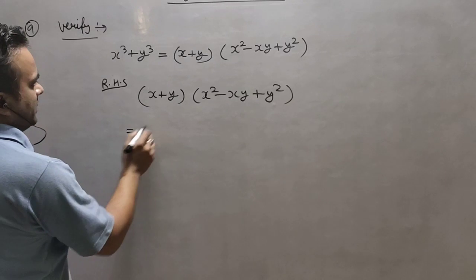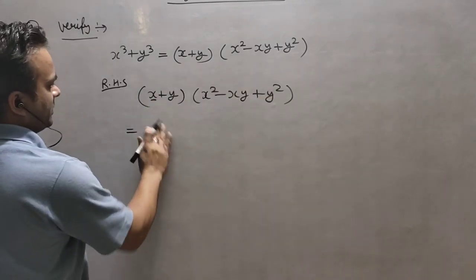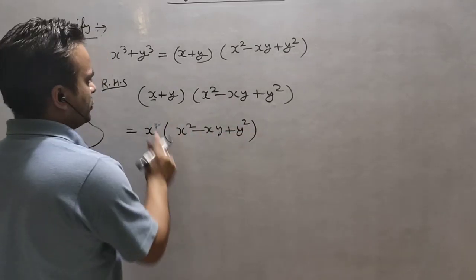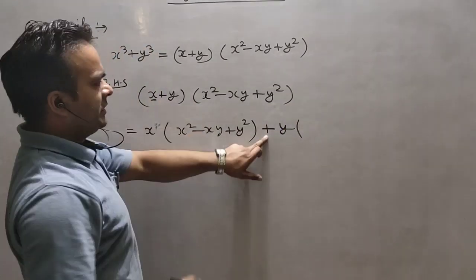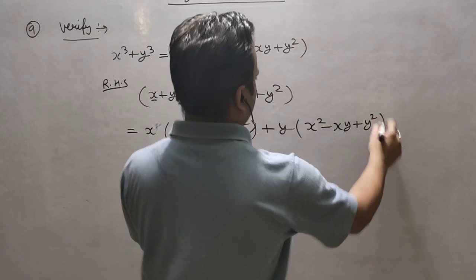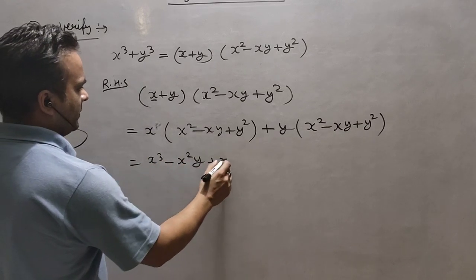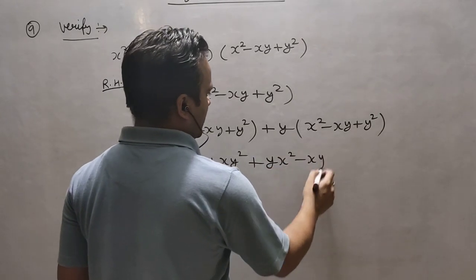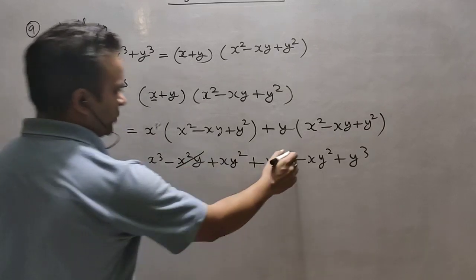One by one we will start. First of all, this x will be multiplied with the whole bracket, so I am writing so that it can be easy to understand. First x multiplies the whole bracket, then plus y — this y will multiply with the whole bracket. So it will be x³ - x²y + xy², then +yx² - xy² + y³.